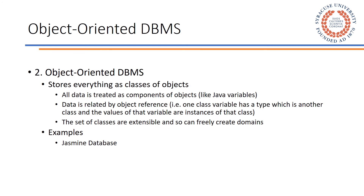Second, we have the object oriented database management system. This type of DBMS stores all the data in the form of classes of objects. Data items are referenced as components of objects. As classes are extensible, we can freely create different types of data type domains. Jasmine is an example of an object oriented DBMS and has an application known as Studio as its development environment. It comes with various built-in classes like picture, image, video, and audio.